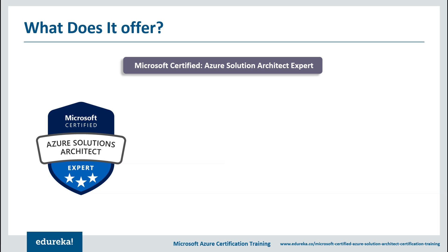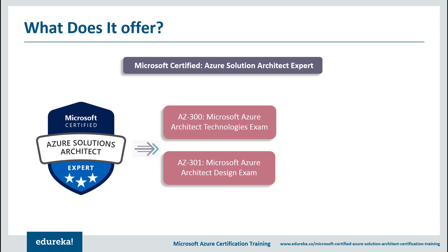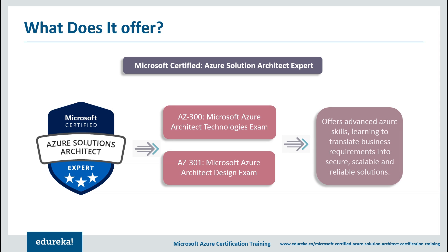Microsoft Certified Azure Solution Architect is a certification launched at the expert level, mainly regarding the role of a cloud solution architect. This exam replaces 70-535, which is the Architecting Microsoft Azure Solutions exam. To achieve the certification, you need to pass two exams: AZ-300 (Microsoft Azure Architect Technologies) and AZ-301 (Microsoft Azure Architect Design). With these exams, you will learn advanced Azure skills, how to translate business requirements into secure, scalable, and reliable solutions, and strengthen skills across compute, network, storage, and security. Our main focus today is AZ-300.